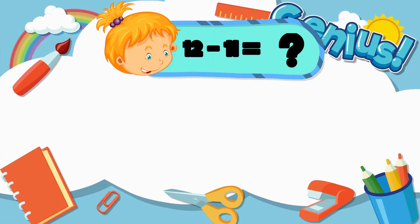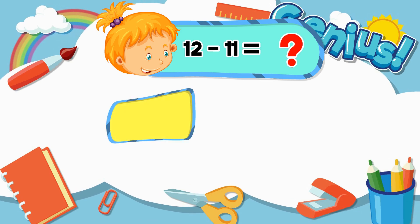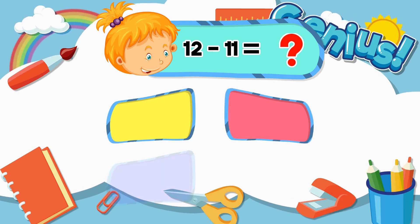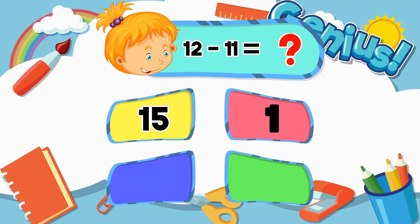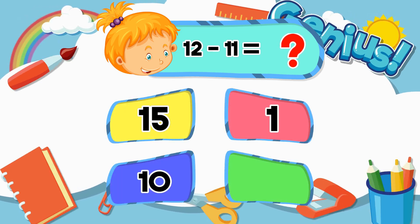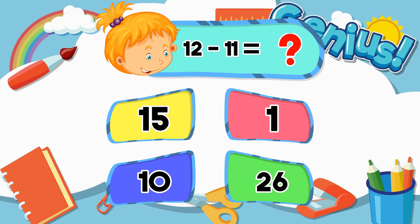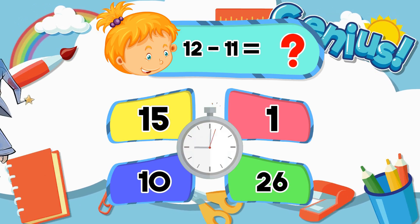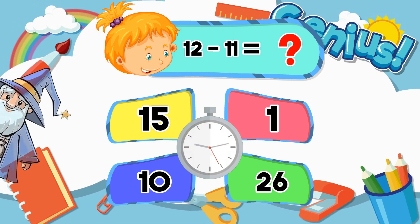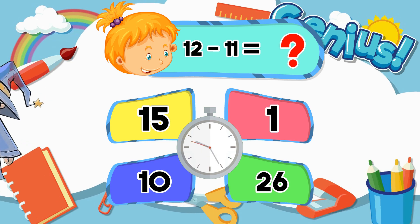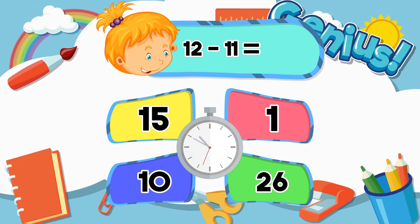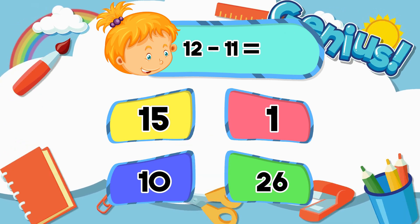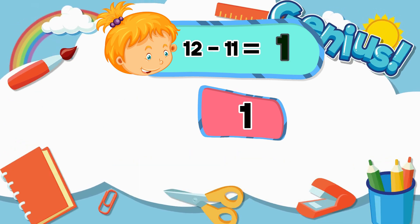What is 12 minus 11? Options: 15, 1, 10, 26. Answer: 1.